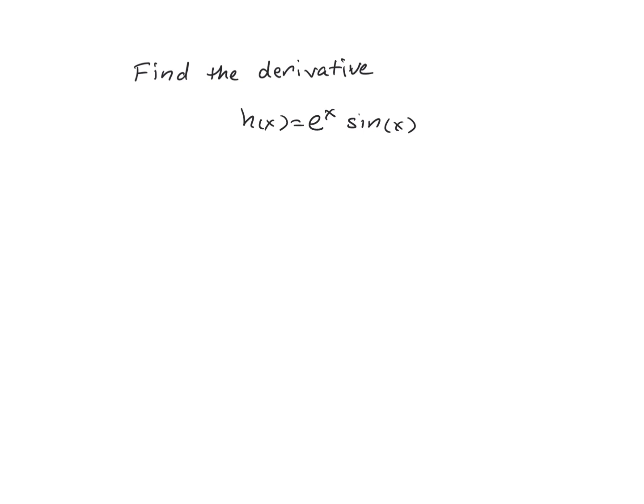For this problem we're going to use the product rule. That product rule is where we take the derivative of the product of f(x) times g(x).